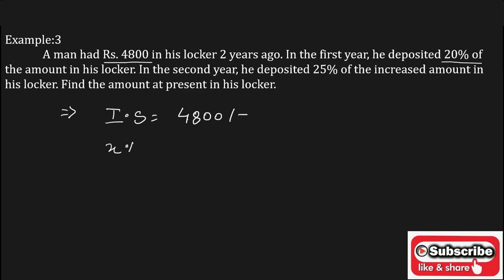That is to the initial amount after incrementing 20%, he is adding that amount to the locker. In the second year, the man deposited 25% of the increased amount in his locker. That is y% is equal to 25%. Now, we have to find the present amount in the locker.